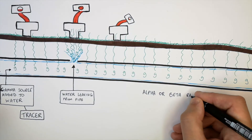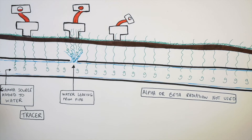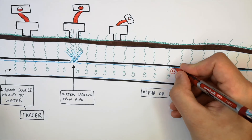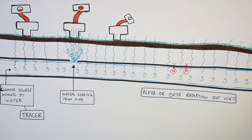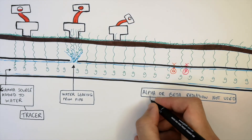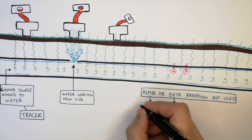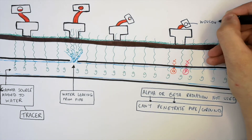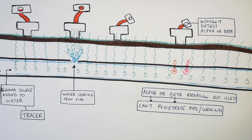Alpha and beta particles are not used as tracers for this purpose. This is because alpha particles and beta particles can't penetrate the pipe and the ground to the surface where the person is measuring the count rate. So if they did use alpha or beta radiation, the person wouldn't be able to detect the particles. That is why gamma radiation is used as a tracer to find water leaks, and the gamma radiation must have a really low half-life.